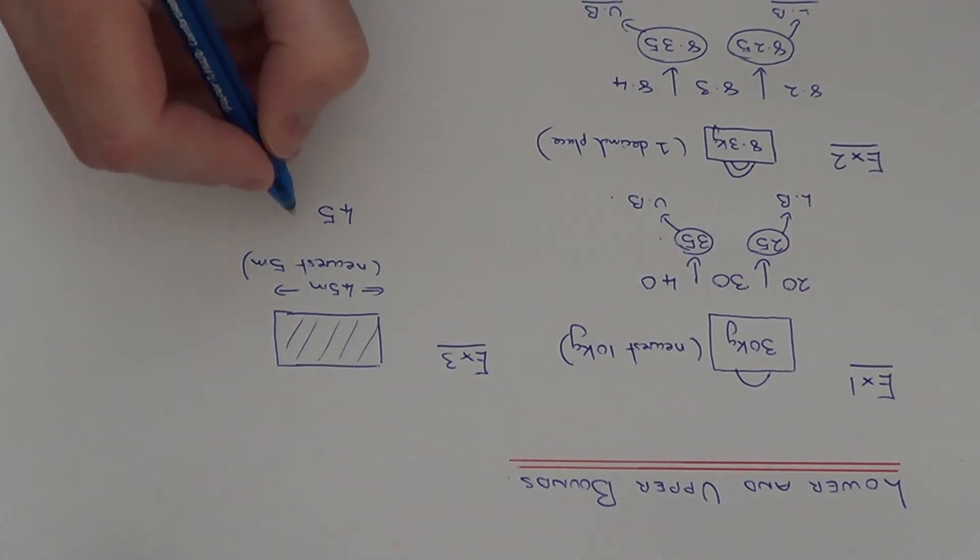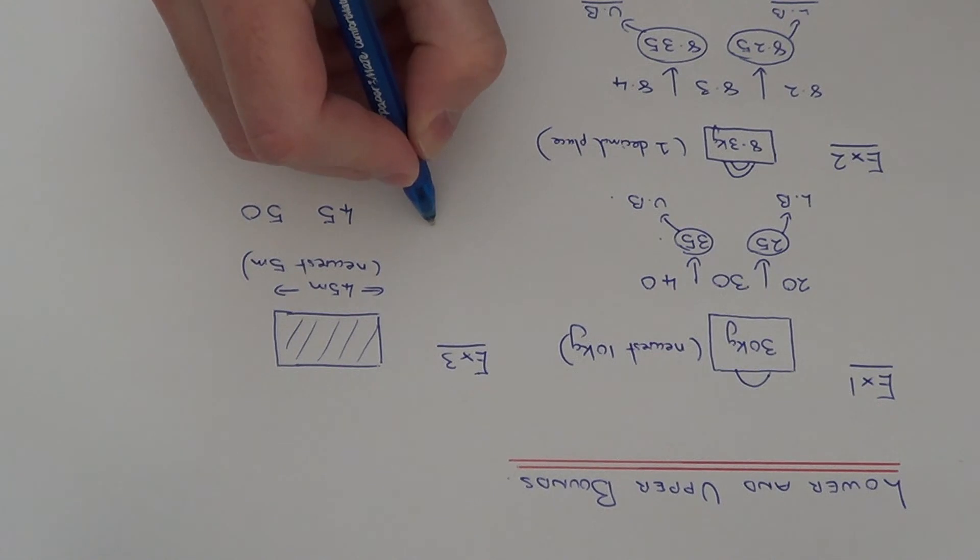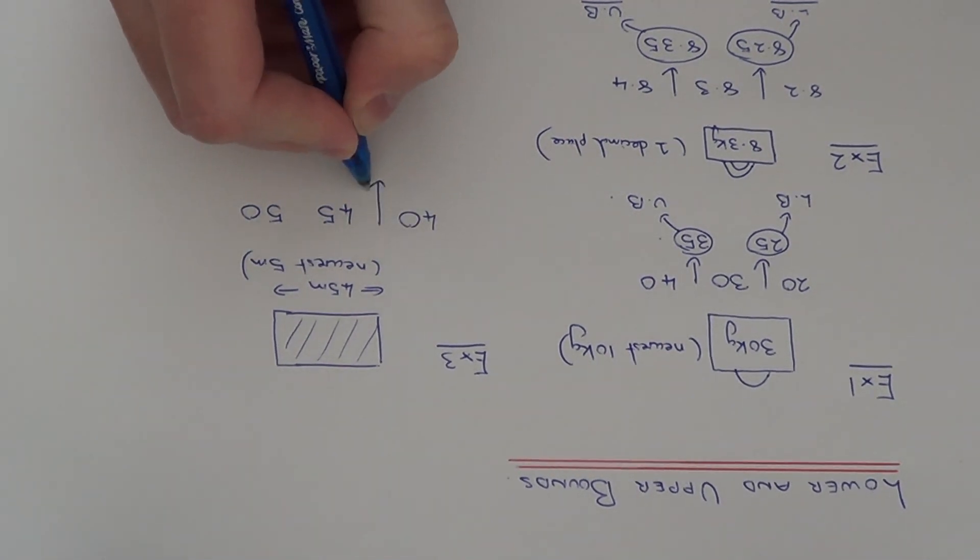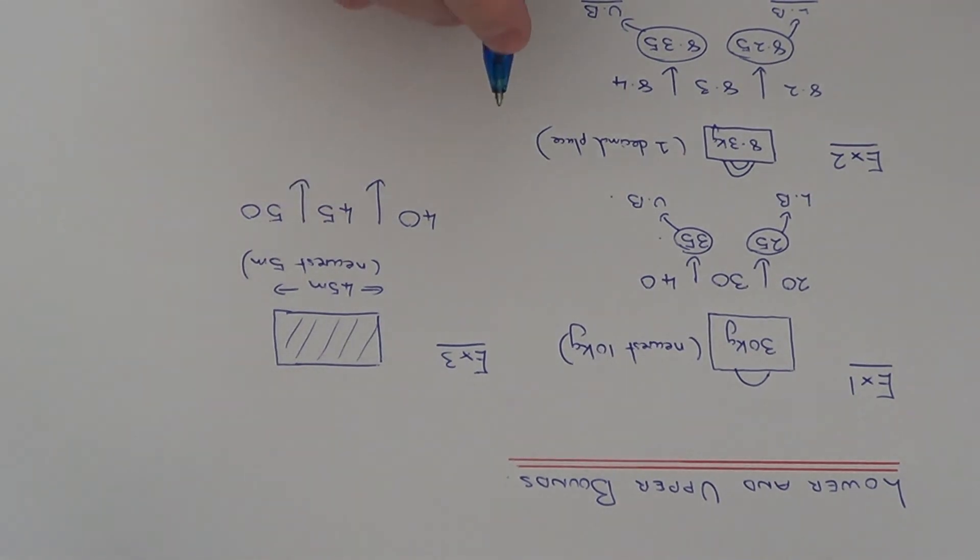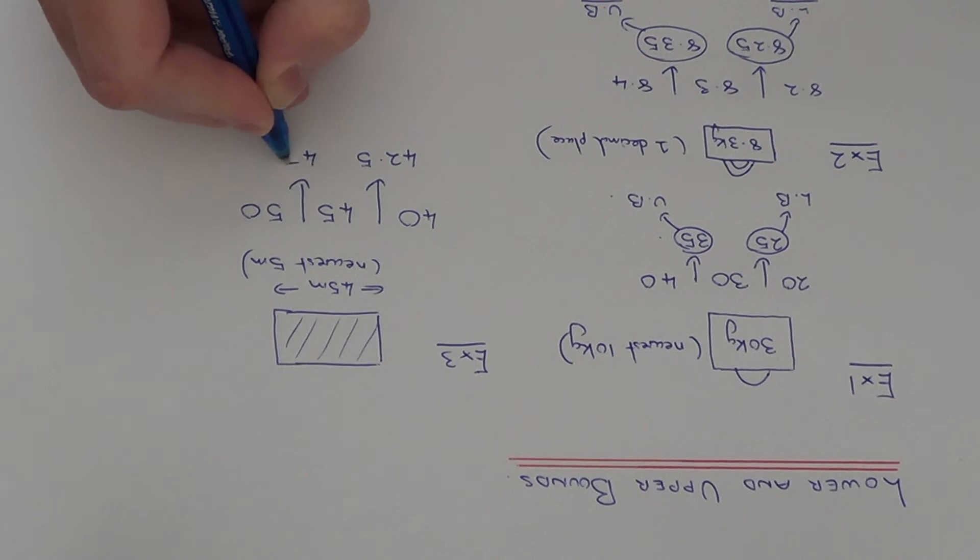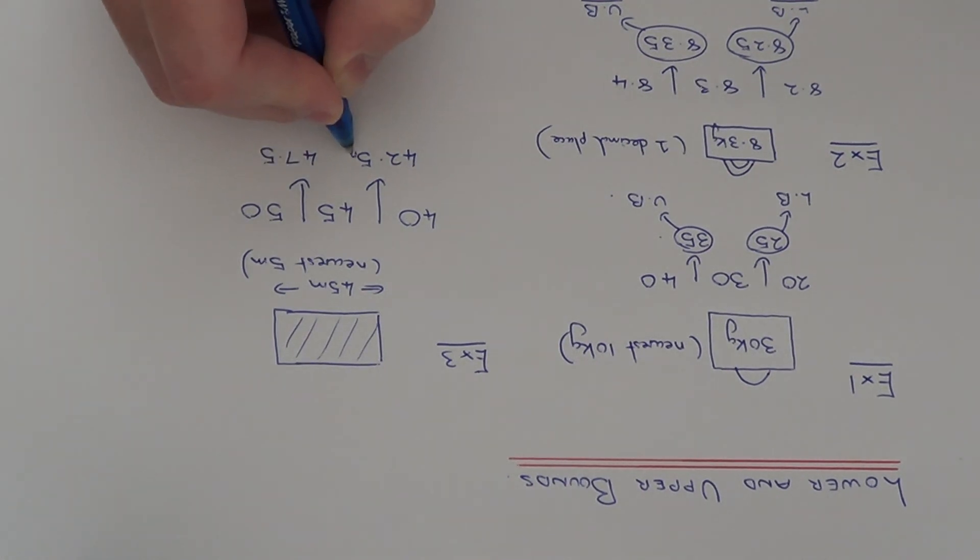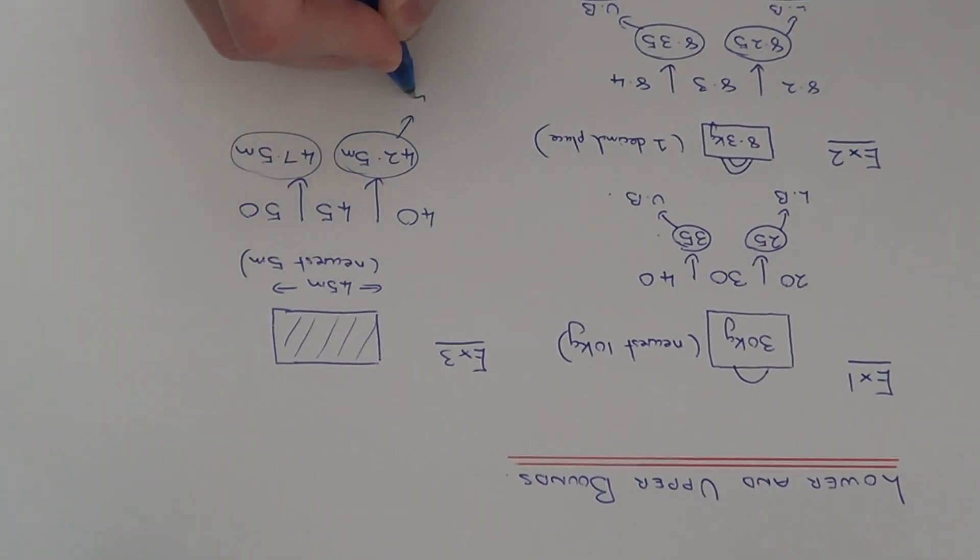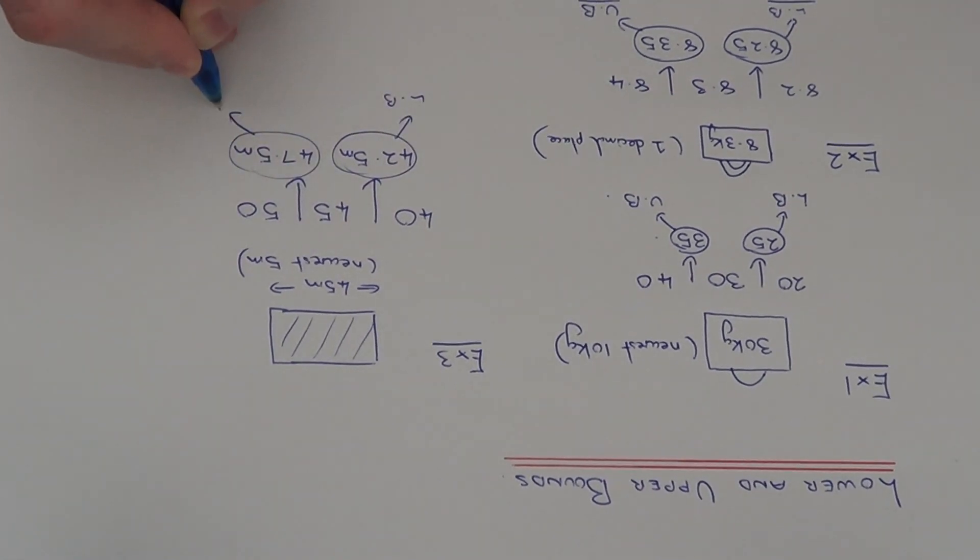The value above 45 on the scale is 50. The value below 45 on the scale is 40. So next thing just take the halfway points. Halfway between 40 and 45 is 42.5. Halfway between 45 and 50 is 47.5. So again these are lower and upper bounds for the length of the field.